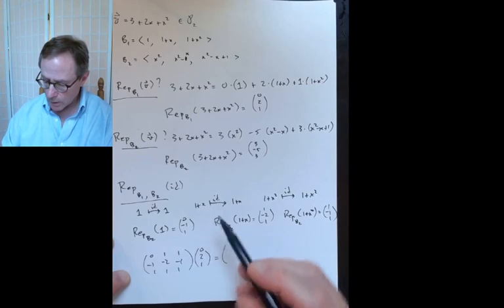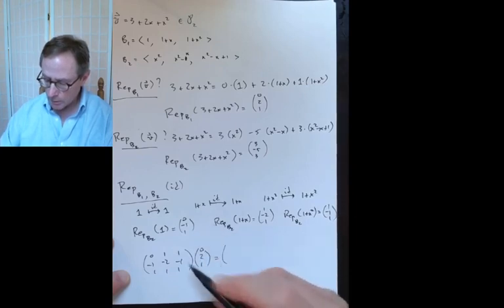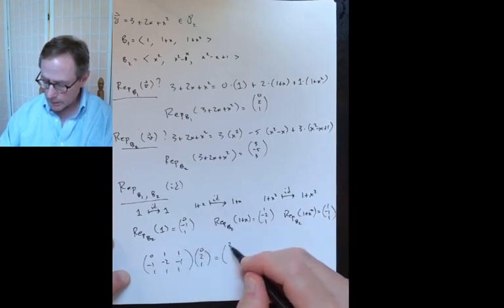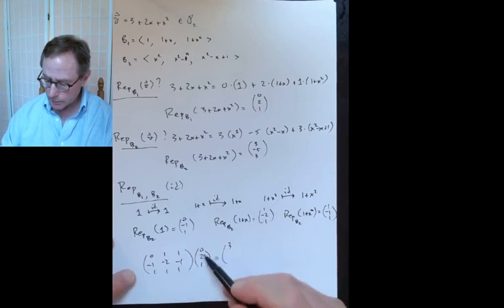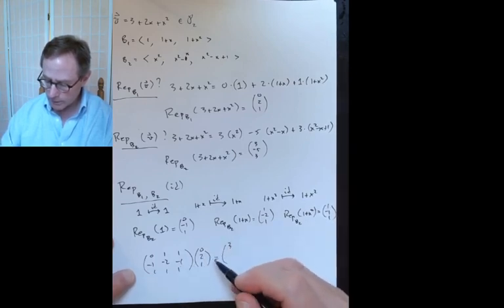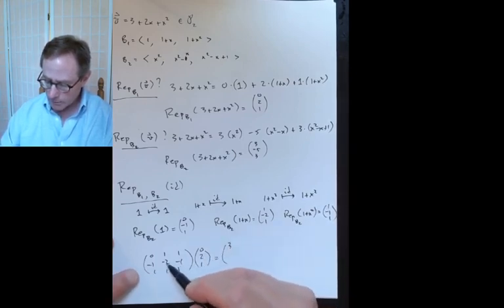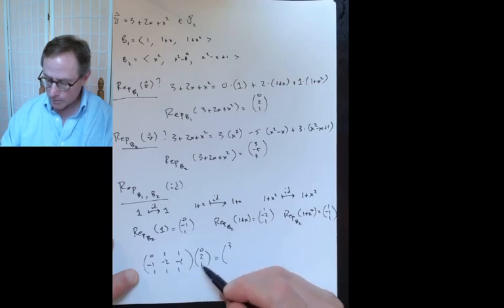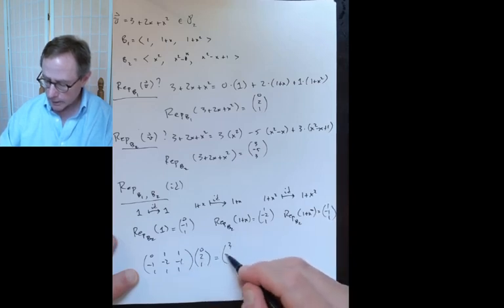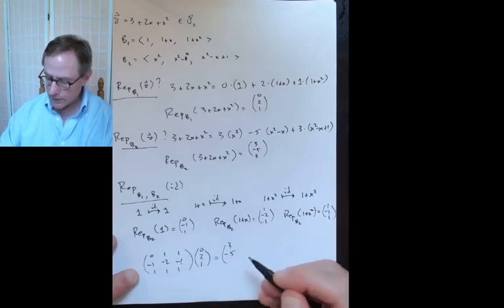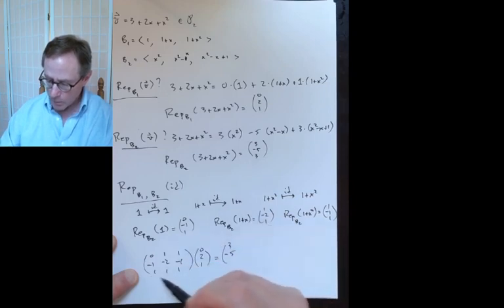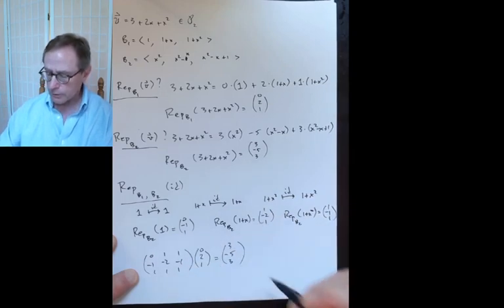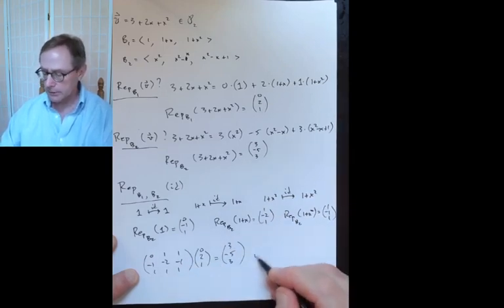Taking the dot product of the first row (0, 1, 1) with (0, 2, 1): that gives 3. Those zeros are convenient. For the second row (minus 1, minus 2, minus 1) with (0, 2, 1): minus 2 times 2 is minus 4, minus 1, giving a total of minus 5. And the third row (1, 1, 1) with (0, 2, 1) gives 3. That checks out.